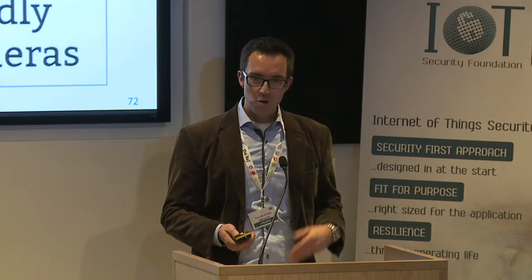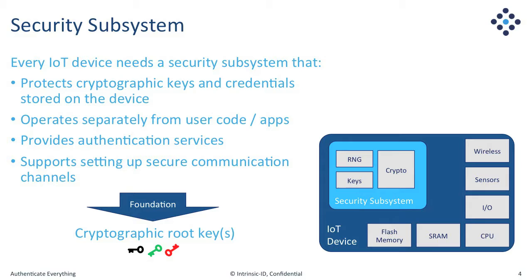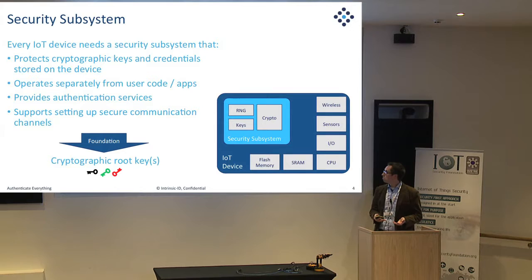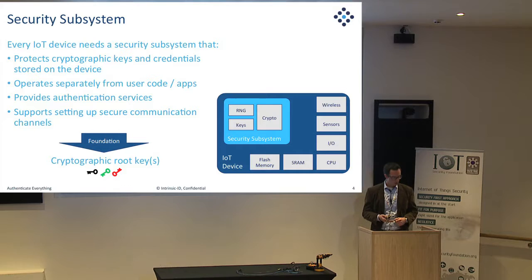So let's go back to the basics. Where do we start when we want to make a system or device secure? As a starting point, we need a security subsystem — a separated environment that takes care of certain security functions. It needs to deal with cryptographic keys and provide services for authentication, encryption, and integrity. It also needs a certain separation of operations from application code, because otherwise we easily lose our security.